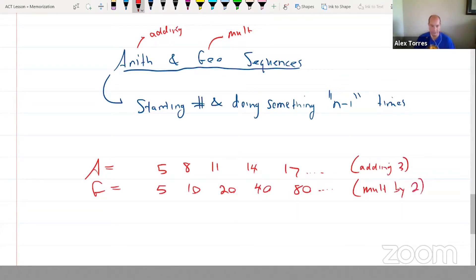So the formulas you need to know: for the arithmetic, the number you're looking for is equal to the first number plus the thing you're adding, and you're adding it n minus 1 times. For the geometric, you have the starting number, but you're multiplying by something n minus 1 times.